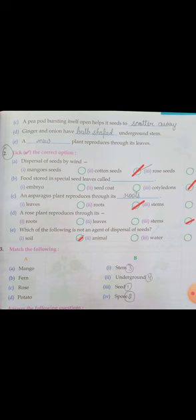Second, fern. Fern kis ke through hota hai reproduce? Spore. C. Rose. Rose ka mujhe bhi pata hai aapko kis ke through hota hai? Stem ke through.